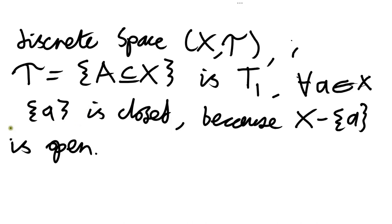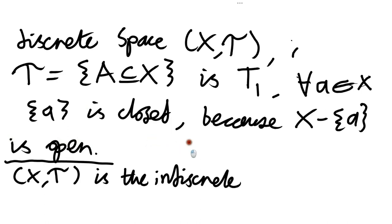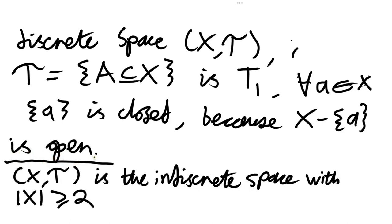Another example we can have a look at is the indiscrete space. Suppose we have the indiscrete space which has at least two elements in the set — we're going to insist that capital X has at least two elements. Is this T0? Is this T1? I claim that it's not even T0, but I'll leave you to think about it.